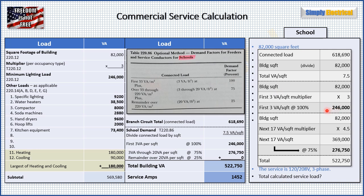For the second line, we cover 3 through 20 VA per square foot at 75%. We had 7.5 total; we already used the first 3, leaving 4.5. Multiply 4.5 by 82,000 and get 369,000 VA. Taking 75% of that gives 276,750 VA. Adding the two bold numbers together — 246,000 plus 276,750 — gives a total building VA of 522,750. We shaved off almost 100,000 VA using this demand factor, which represents substantial savings in wire, conduit, and labor.